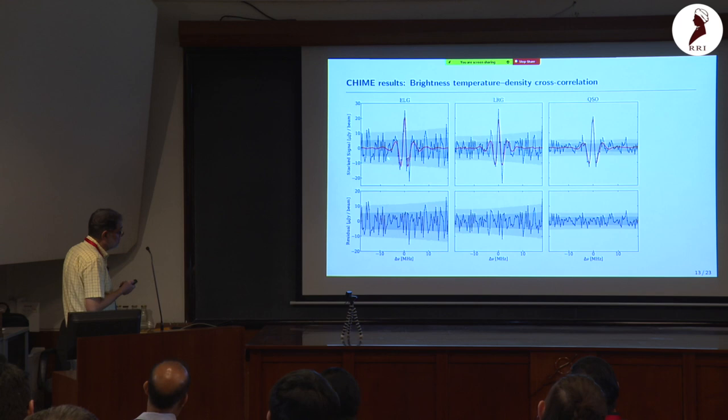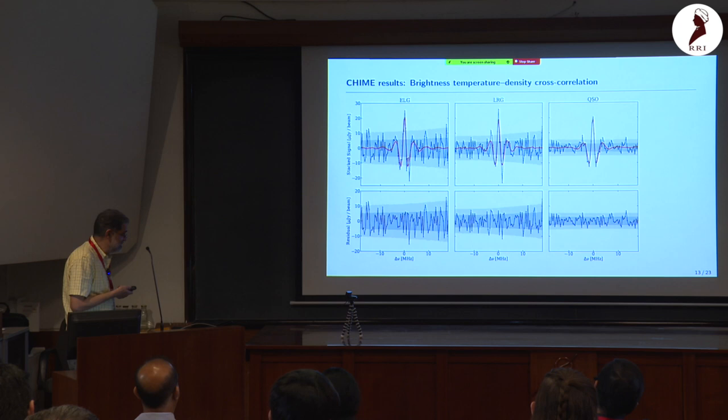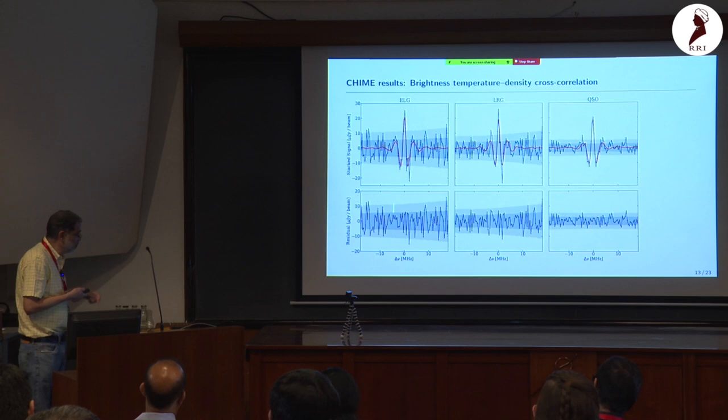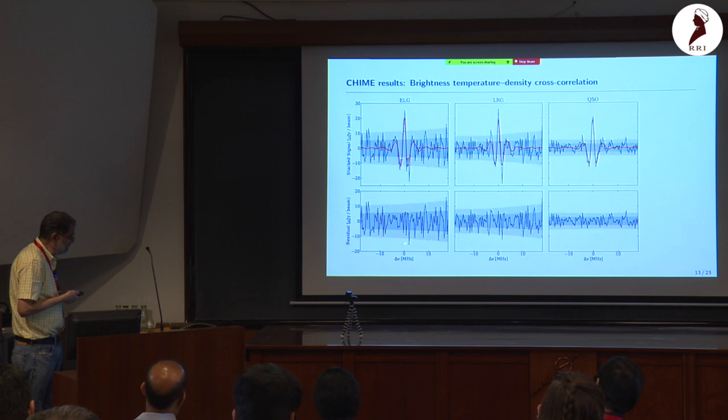You can also do this in frequency space. The cross-correlation was done with three optical surveys and succeeded in all three. There is a peak at delta-nu = 0, and shifting by around a megahertz causes it to drop to zero, as expected. This experiment has reported clear detection.